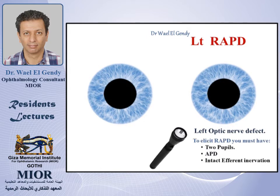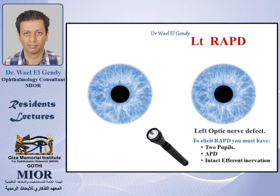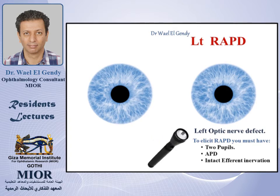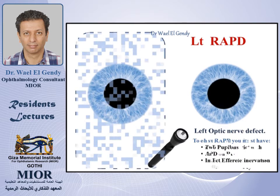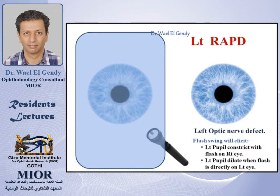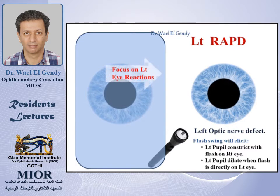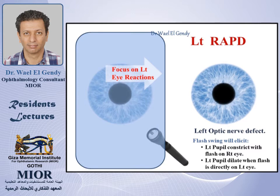The left pupil has an intact efferent innervation. To elicit a relative afferent pupillary defect, we have two pupils — left and right — an afferent pupillary defect in the left eye, and an intact efferent innervation for both pupils. So when you move the light towards the right eye, we get constriction in both eyes. When you move the light to the left pupil, you get dilatation of both pupils. Let's concentrate on the left pupil, which has the relative afferent pupillary defect.